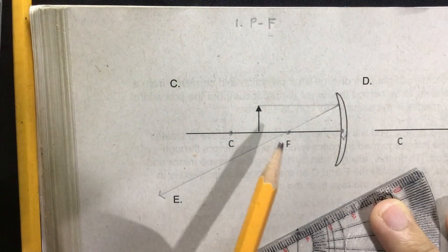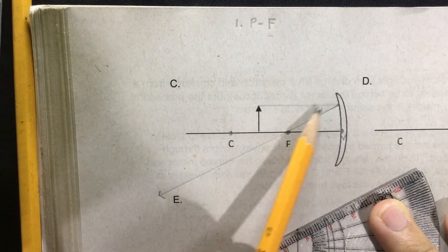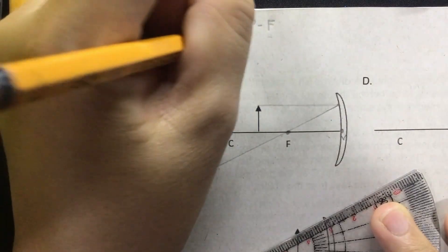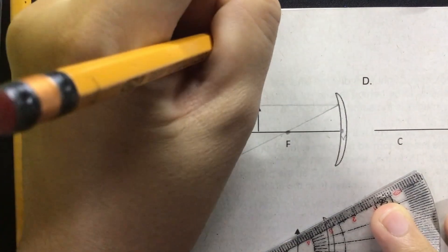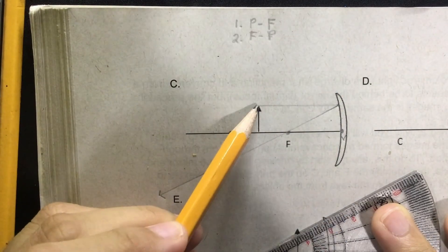Okay, so this is our first principal ray, this is the PF ray. The second principal ray is what we call the FP ray. Now what is F? It is a ray of light passing through the focal point first.